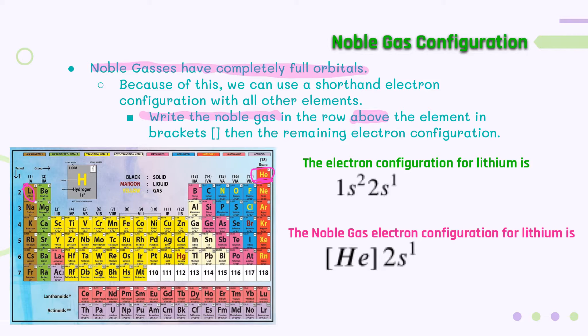So in order to write the electron configuration noble gas configuration for lithium, we would write helium in our brackets, [He], then because what else is left over from the electron configuration is 2s1. Lithium has the exact same electron configuration as helium plus this additional 2s1.